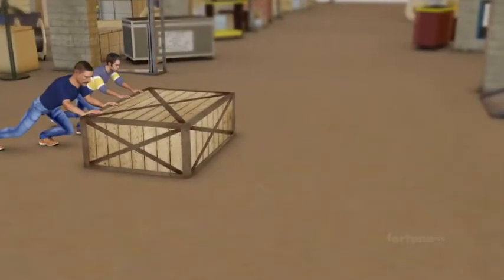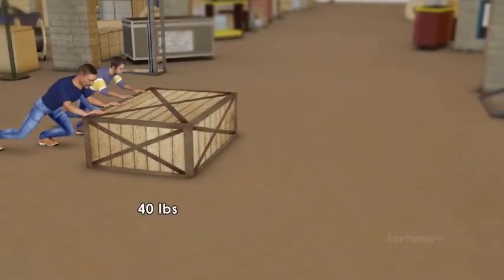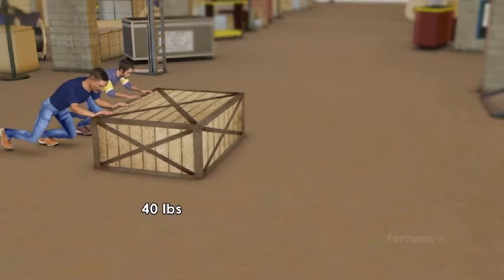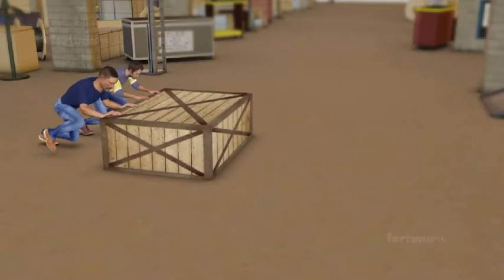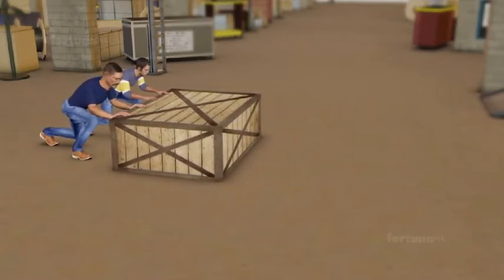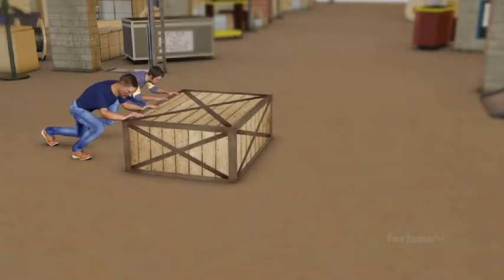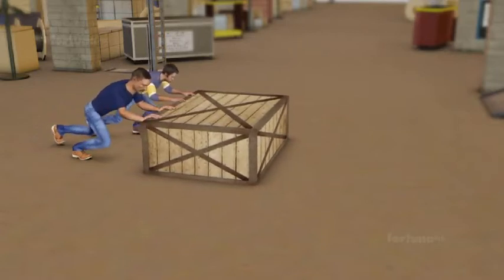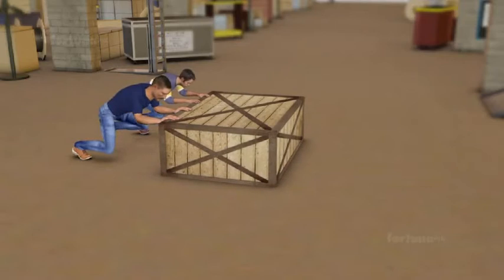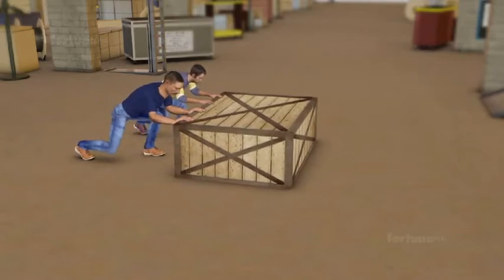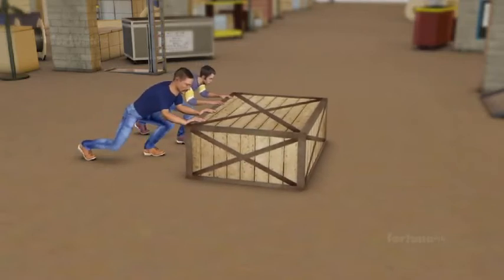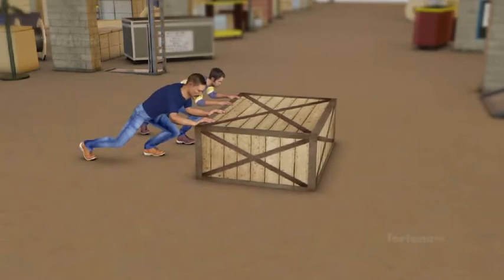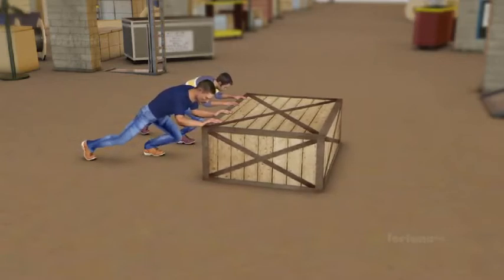Now if you both push a larger box weighing 40 pounds using the same amount of force, the box won't move as fast as the 20-pound box. But why did it slow down? There are still two people pushing it. In this case, the mass of the box has increased, and the force stayed the same. So the acceleration has decreased.